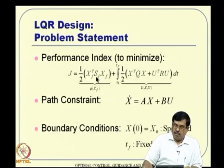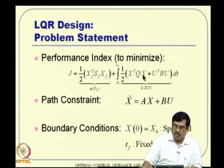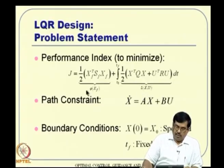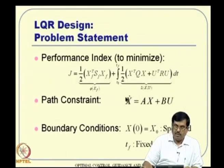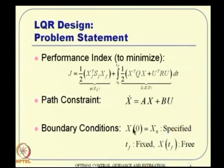There is also a fundamental requirement: the pair (A, B) must be controllable, and the pair (A, sqrt(Q)) must be detectable or in general observable. The performance index is minimized subject to the path constraint X-dot = AX + BU (linear system dynamics), with boundary conditions X(0) = X_0 specified, T_f fixed, and X(T_f) free.